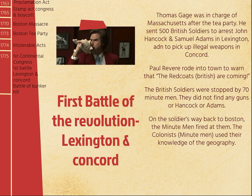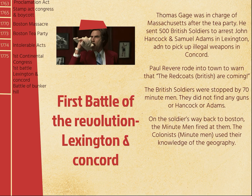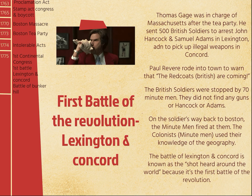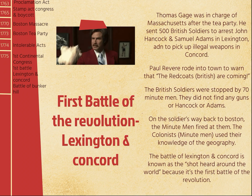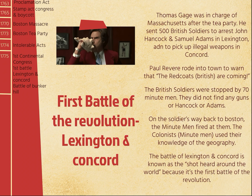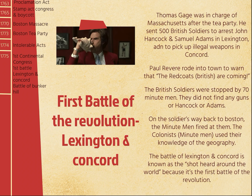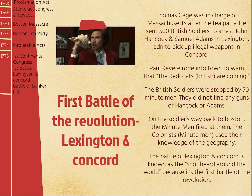On the soldiers' way back to Boston, the Minutemen fired at them. The colonists used their knowledge of geography — they cut them off around a hill, used bushes for coverage, and that's how they attacked. This battle is known as the Battle of Lexington and Concord. In the city of Lexington it's called the Battle of Lexington; in Concord it's the Battle of Concord — they're very competitive about the name. It was known as the shot heard around the world because it's the first time any colony rebelled against its European mother country, and it led to other countries deciding to rebel.